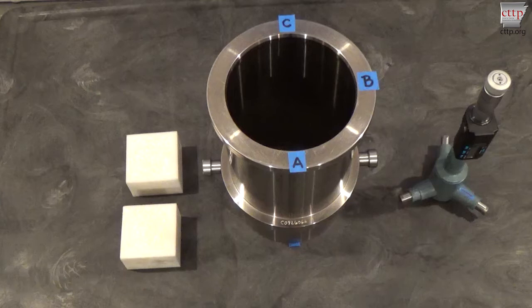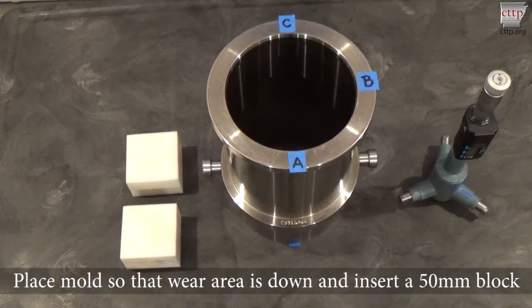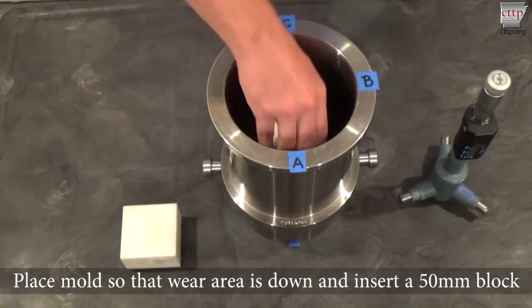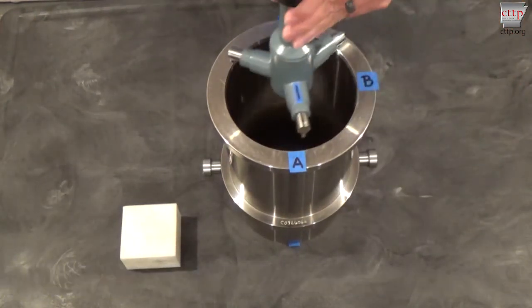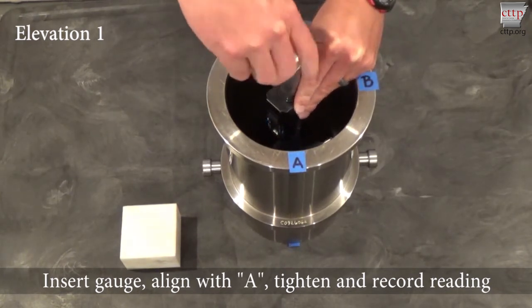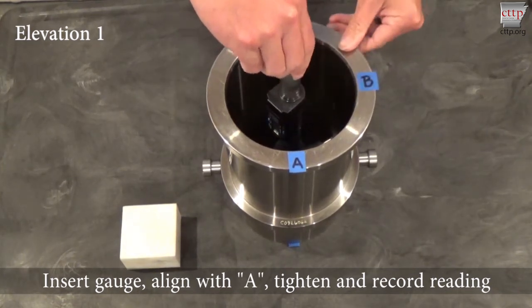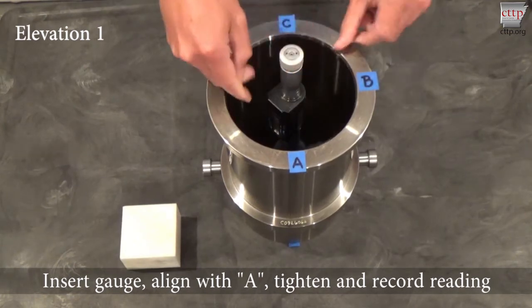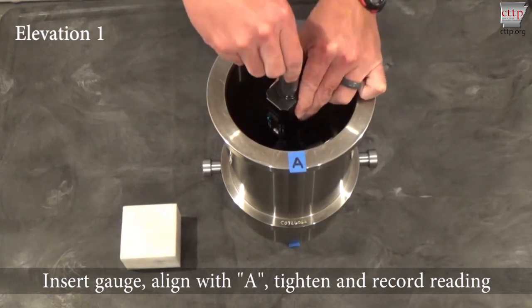Place the mold so that the wear area is down. Insert a 50mm spacer block to obtain readings for elevation 1. Insert the bore gauge until it rests on the spacer block. Align one of the three arms with A and tighten the bore gauge. Record the reading and then loosen the bore gauge.